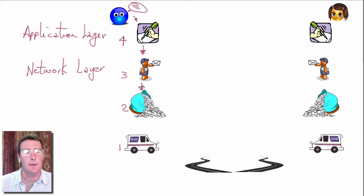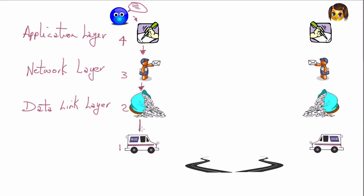That was then encapsulated by the post office mailbags. In an OSI model, that's similar to what we call a data link layer, which also has some addressing information in it. Finally, that has to get delivered, physically delivered, over some type of medium. This is the responsibility in the OSI model of the physical layer.